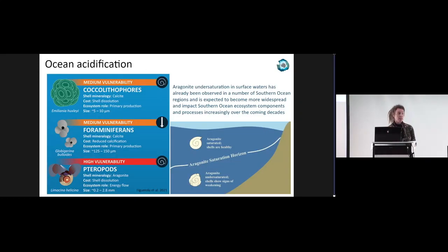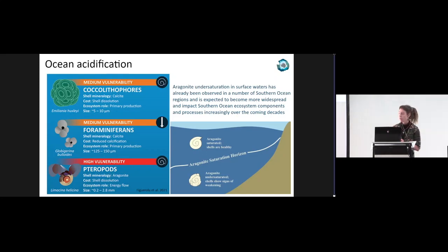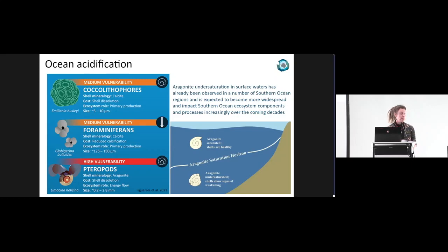The Southern Ocean is particularly vulnerable to ocean acidification because of the effect of temperature on carbonate chemistry. Ocean acidification is affecting ecosystems at all depths, but organisms at deeper depths are particularly vulnerable because of the effects of both temperature and pressure on the dissolution of calcium carbonate. The effect of increased carbon dioxide in the atmosphere and consequent uptake by the oceans is that the aragonite saturation horizon is shallowing — so the depth range suitable for calcification is shrinking and will continue to shrink. Aragonite undersaturation in surface waters has already been observed in a number of Southern Ocean regions and is expected to become more widespread, impacting ecosystem components and processes increasingly over coming decades. Benthic calcifying species are particularly vulnerable, but also pelagic groups like coccolithophores, foraminiferans and pteropods.